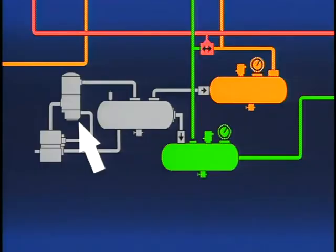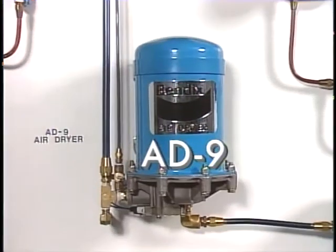a desiccant air dryer, like this Bendix AD-9, is installed to remove 100% of the liquid and solid contaminants and approximately 95% of the water vapor prior to entering the brake system.